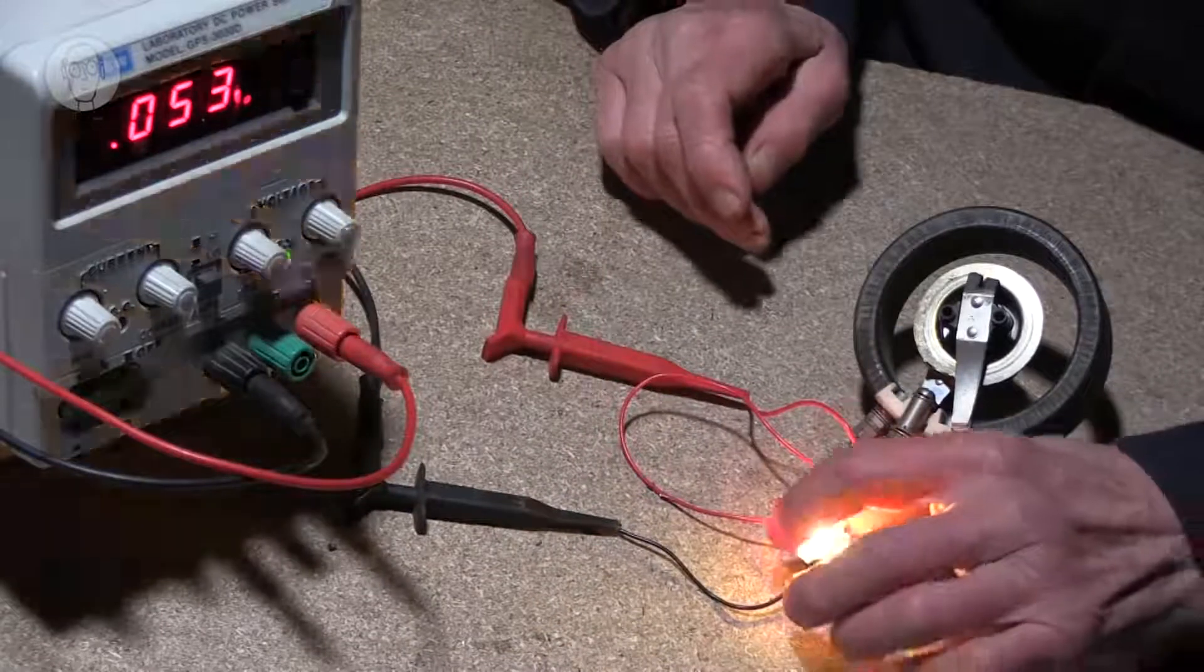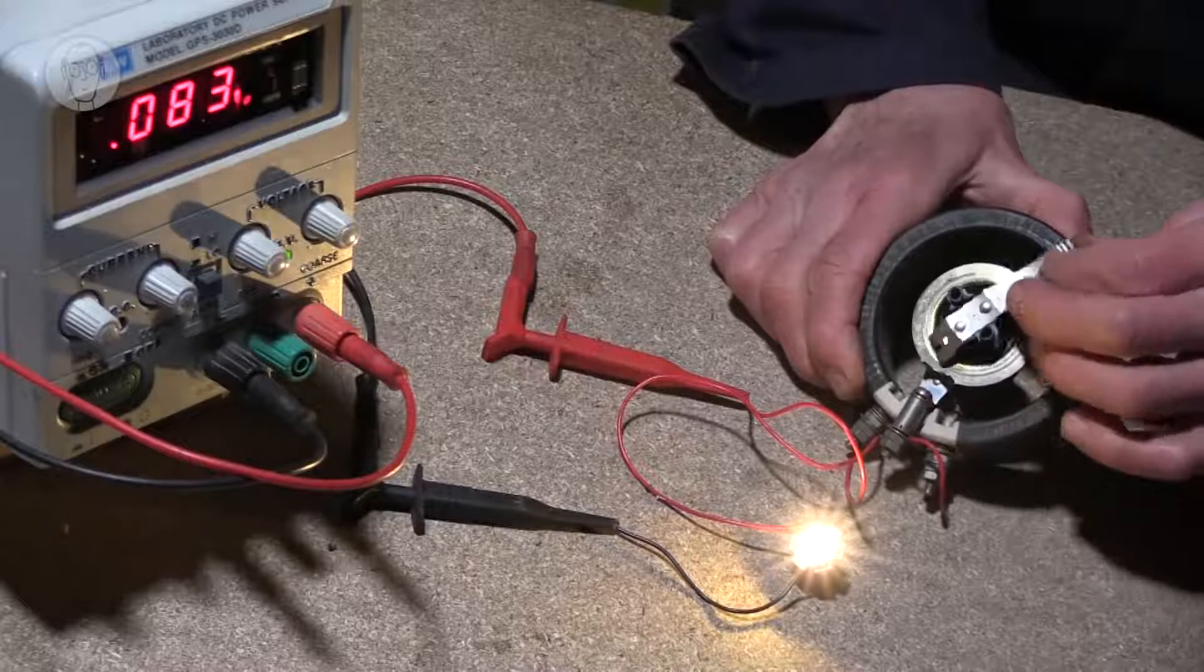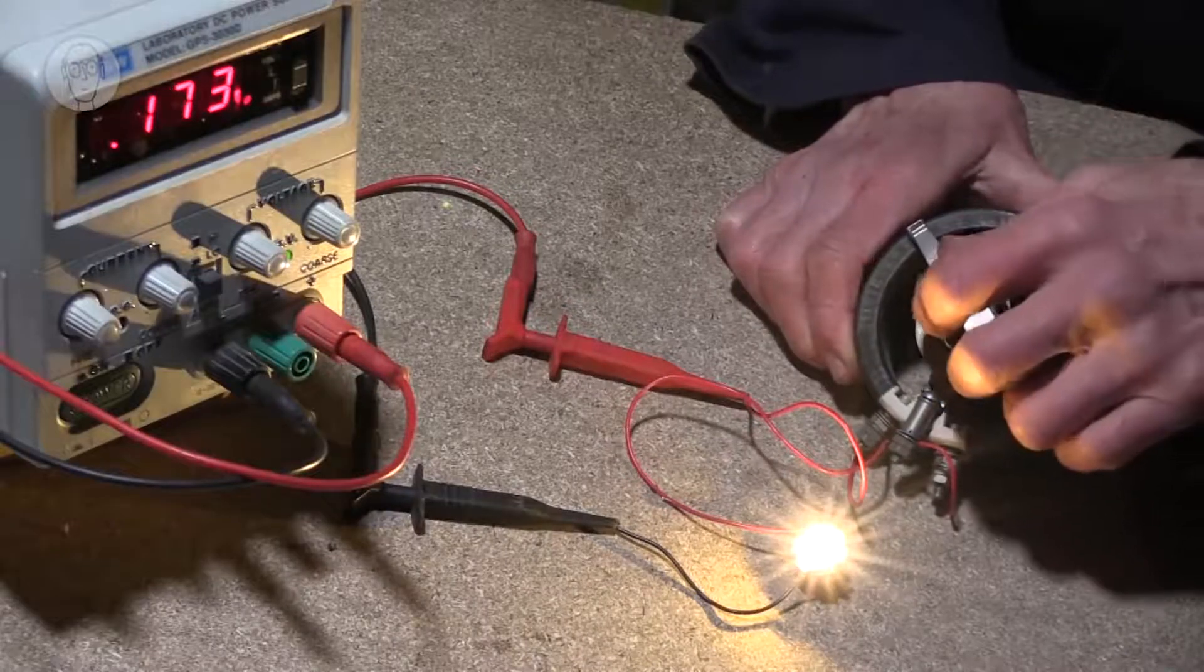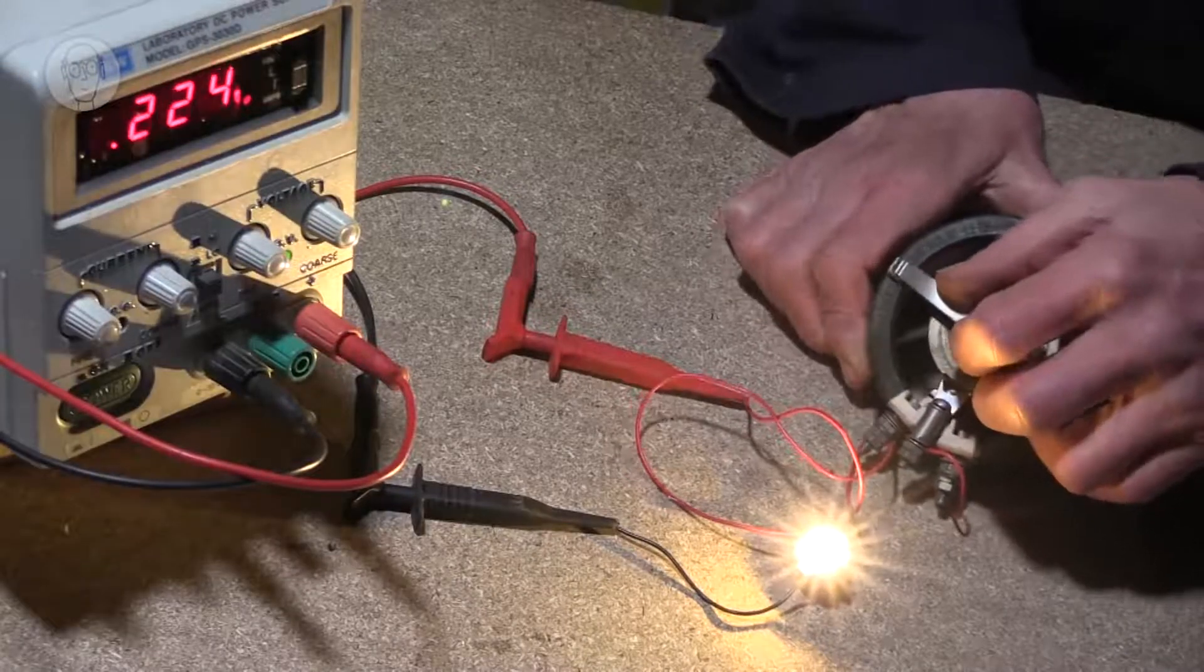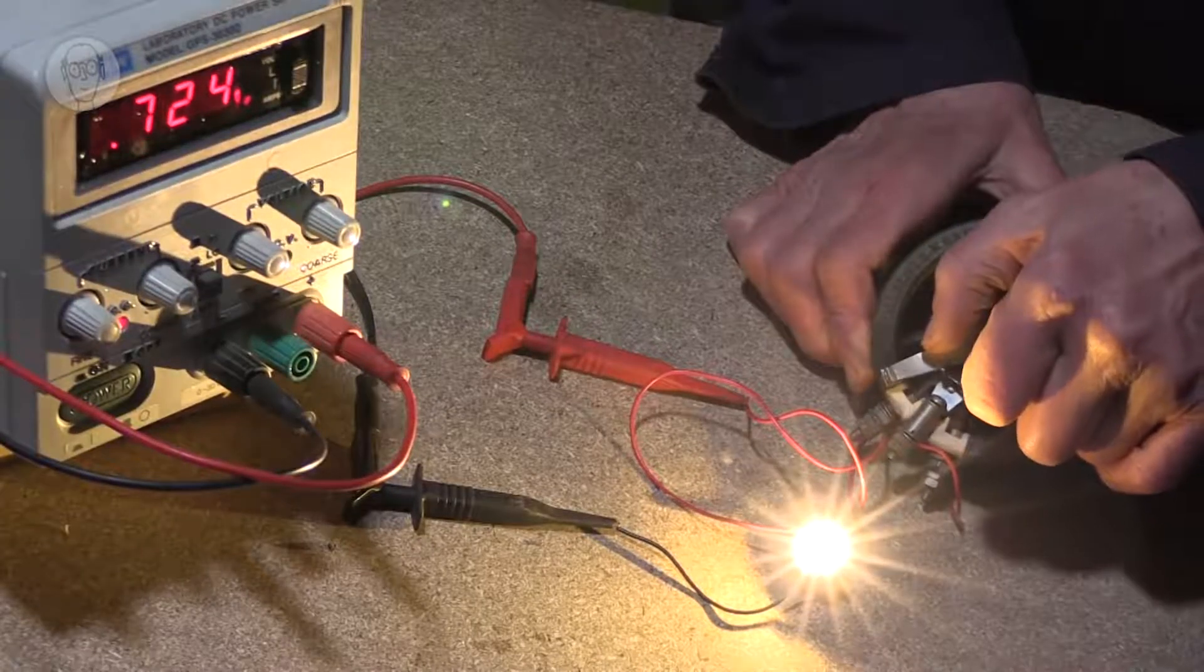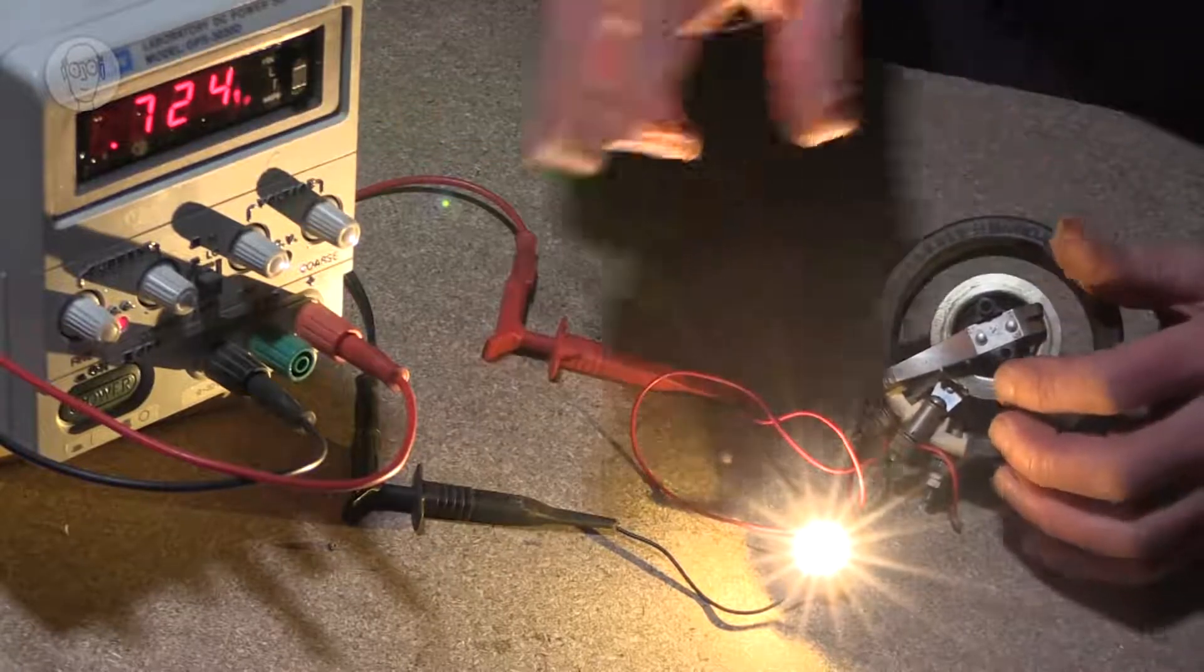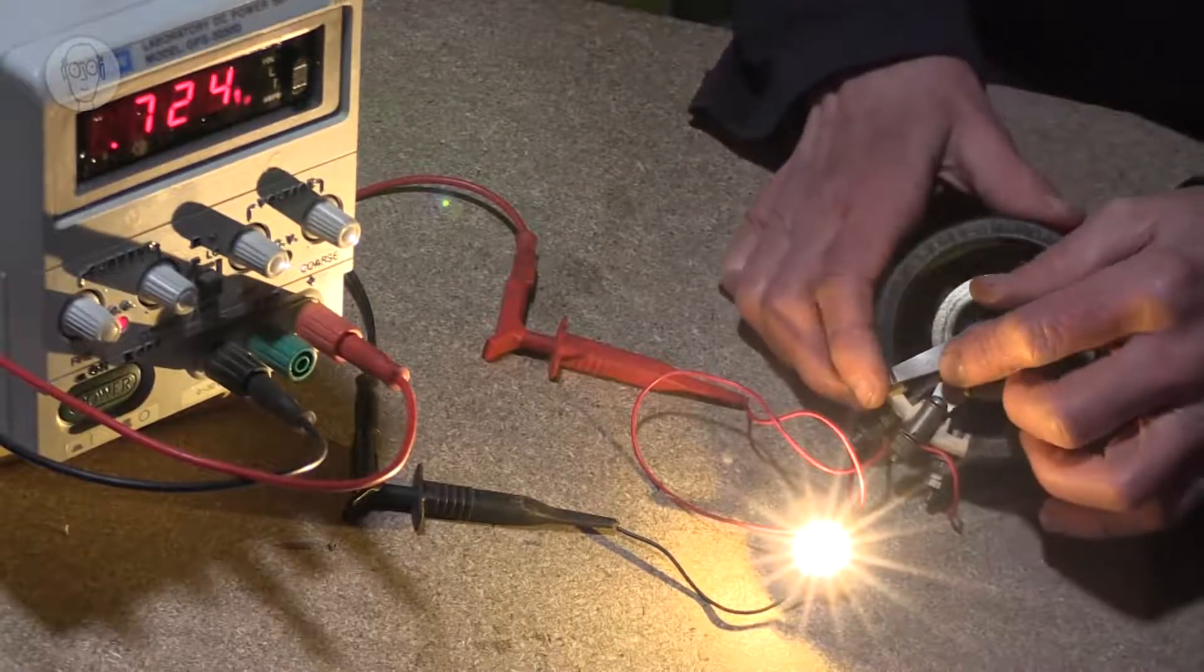There's a certain amount of light from it even with the high resistance, and obviously if I lower the resistance it'll get brighter. Now at some point, with no resistance, it's being limited by the current on the benchtop power supply.